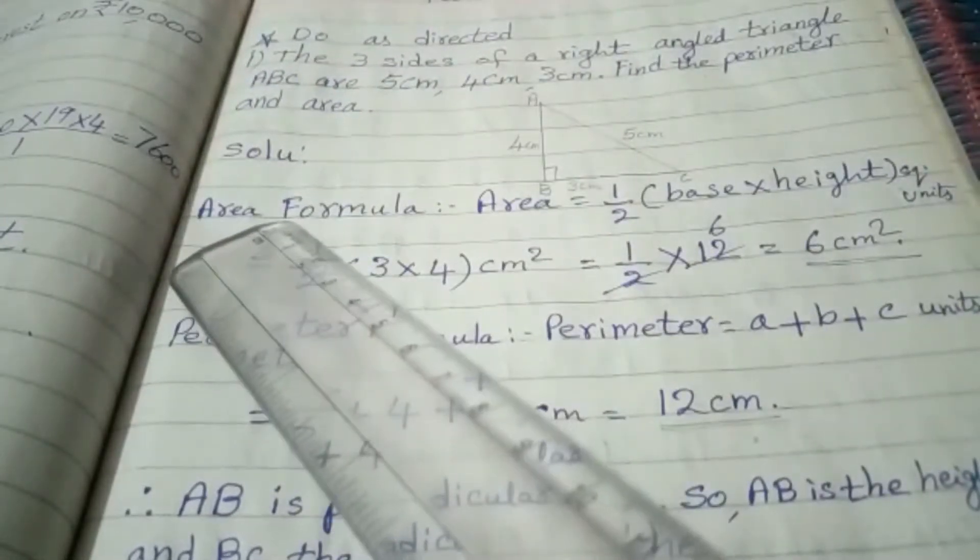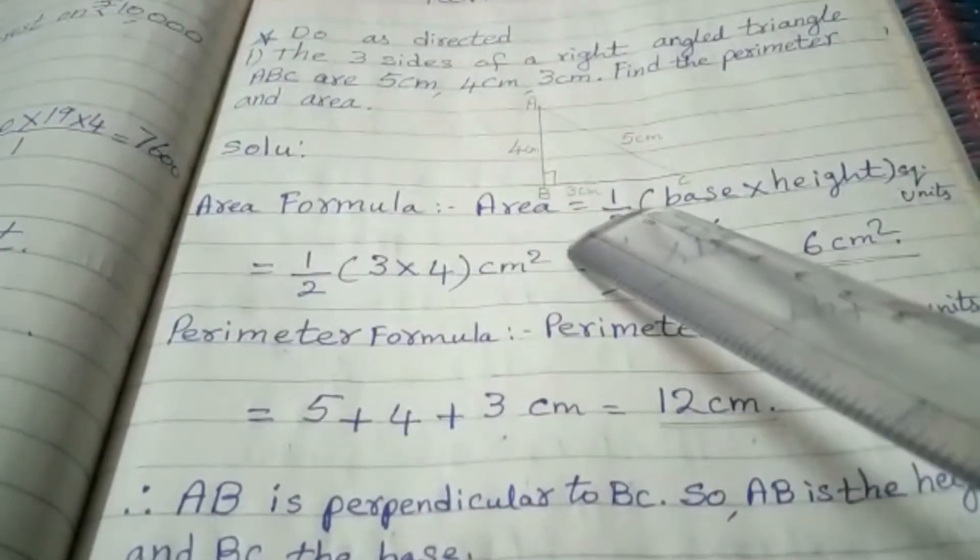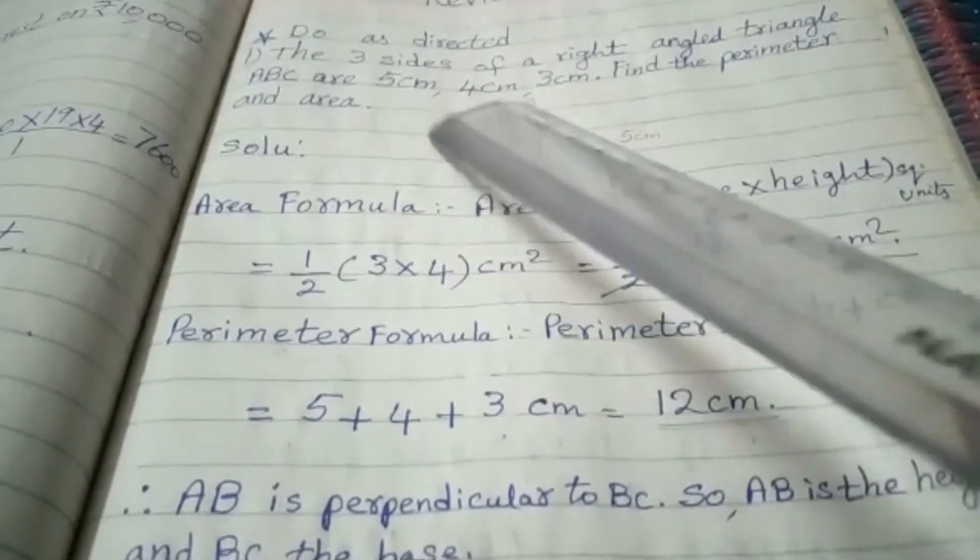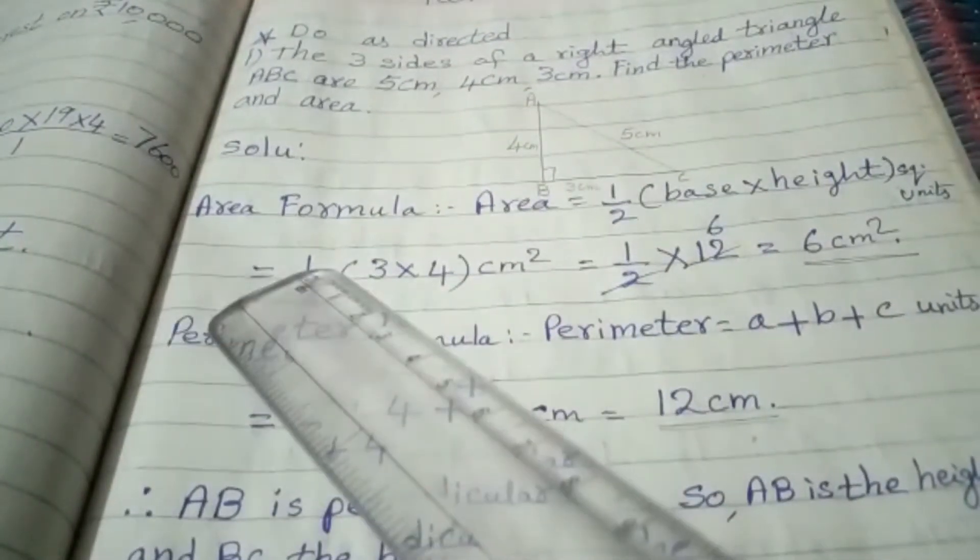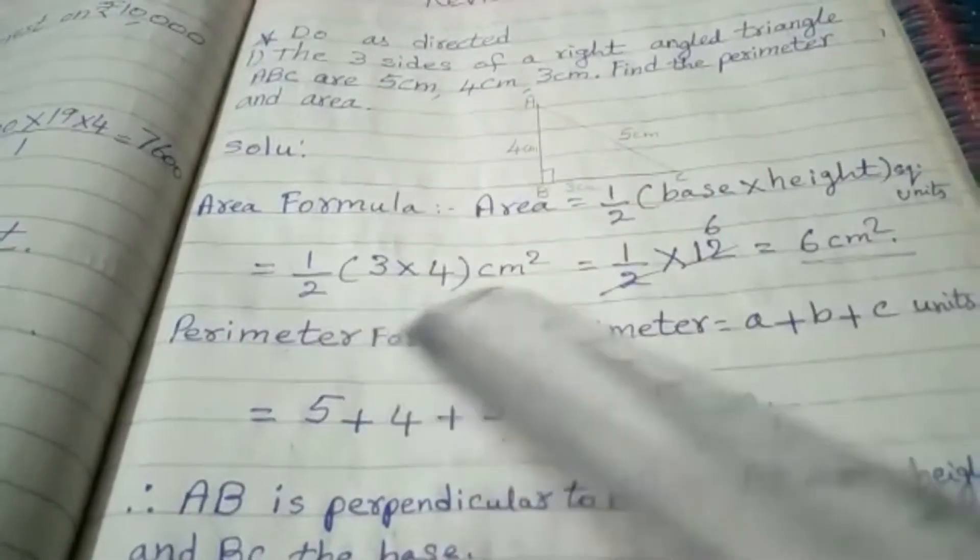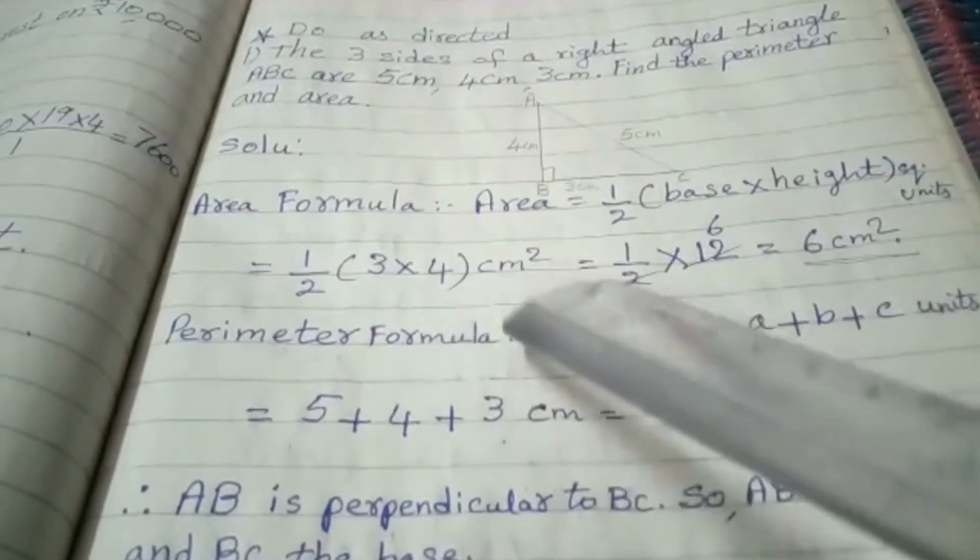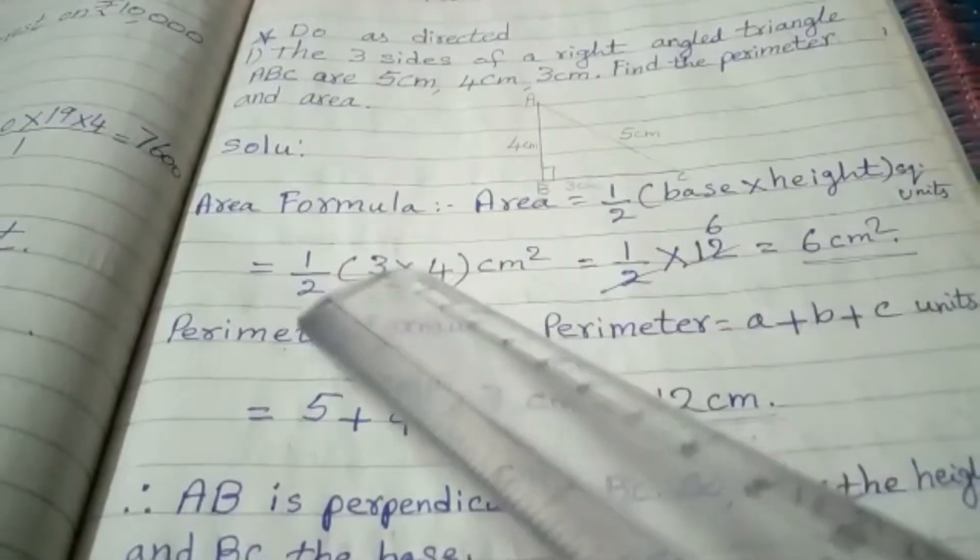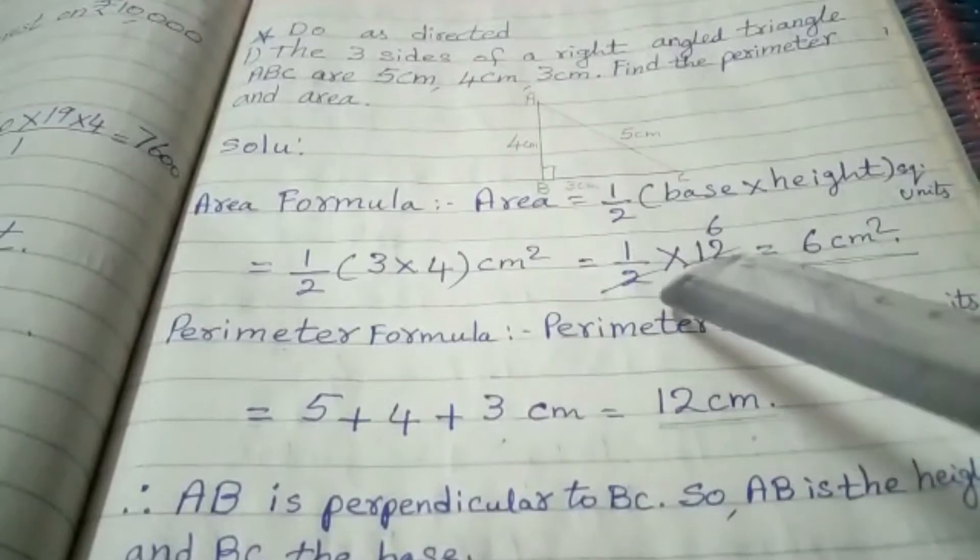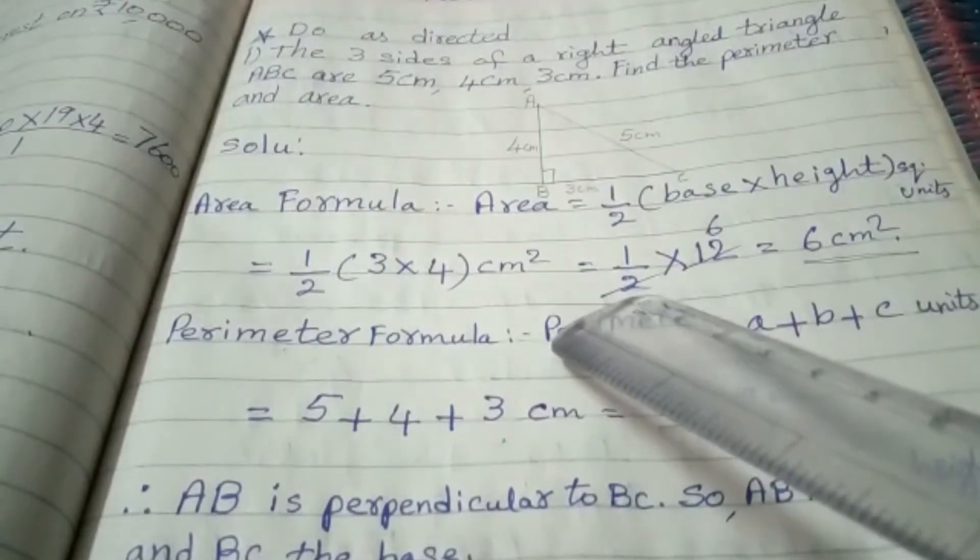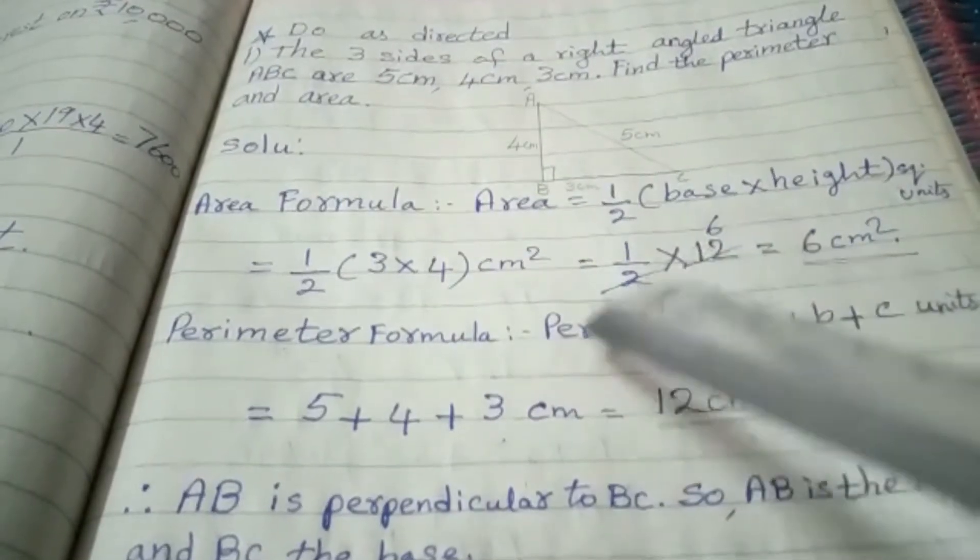Area formula: Area is equal to half into base into height square units. That is equal to half into 3 into 4 square centimeters. That is equal to half into 12. 3 times 4 is 12. How many times does 12 go in 2 table? 6 times. 2 times 6 are 12.